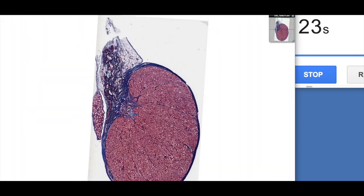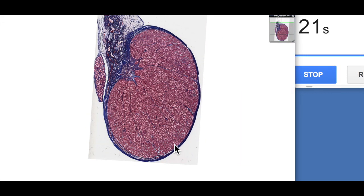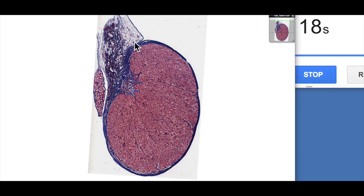So hopefully you can see those major features of the testis there. Again, the major features are of course the tunica albuginea, its underlying tunica vasculosa,